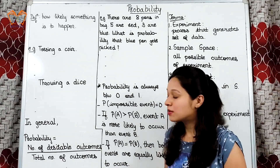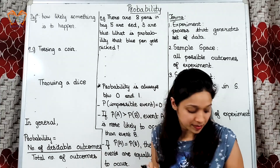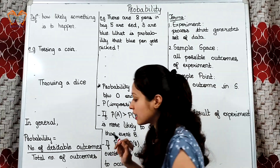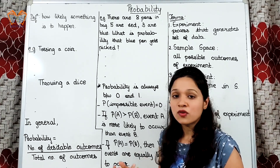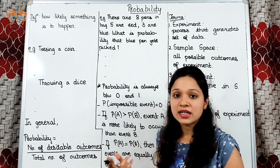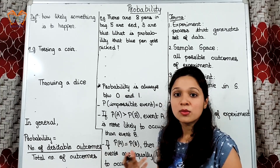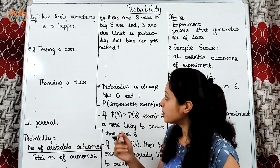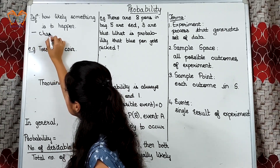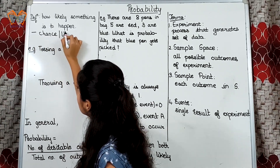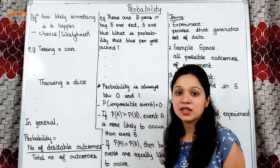Now, what does probability mean, or the definition of probability? It says how likely something is to happen. This simply means that when we are not sure about the outcome of any particular event, we talk about probabilities. For example, whether it will rain tomorrow or not — we are not sure whether it will rain or it will not rain. So, we can go for probability of that event. We can say it reflects chance or likelihood of a particular event.